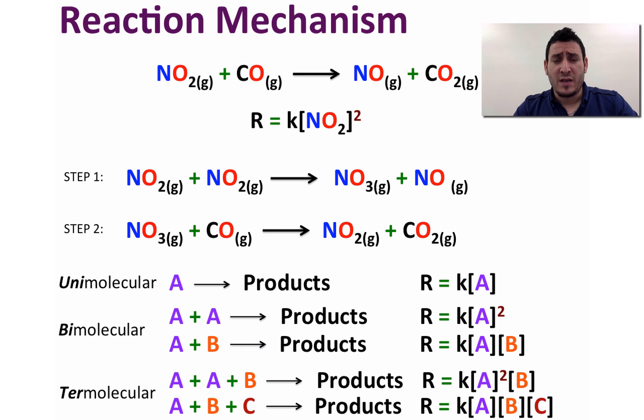At every time, you can notice that the order in each reactant is taken from the coefficient of the elementary step. For example, when you have A plus A, which is 2A, we can see that the power of the concentration of A is 2, which means that the rate is second order in A. Now when we have A plus B, we can see that the order in each reactant is equal to 1, therefore it's first order in A and first order in B. Take the reaction where it's A plus A plus B, the rate is second order in A and first order in B.